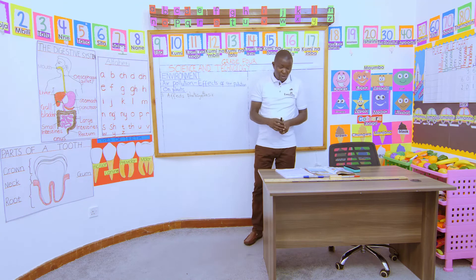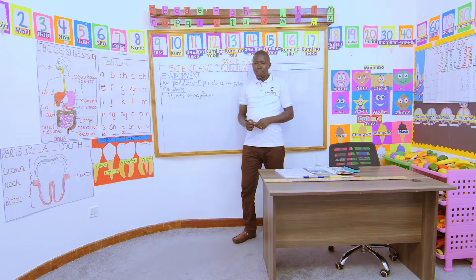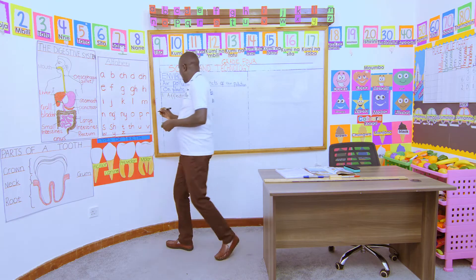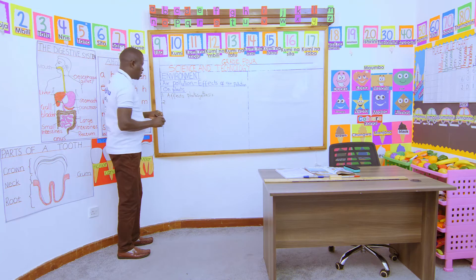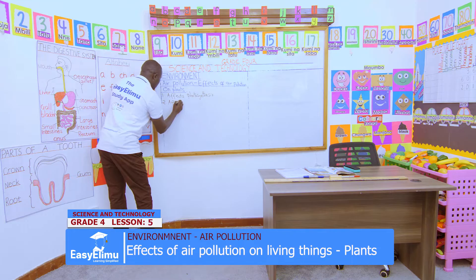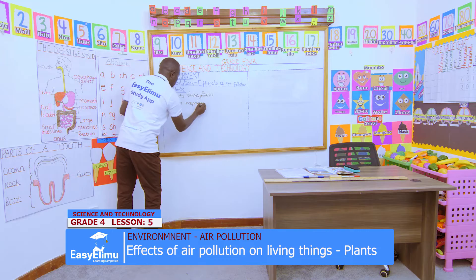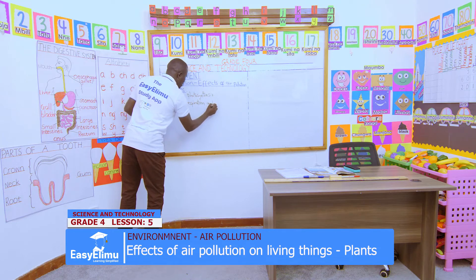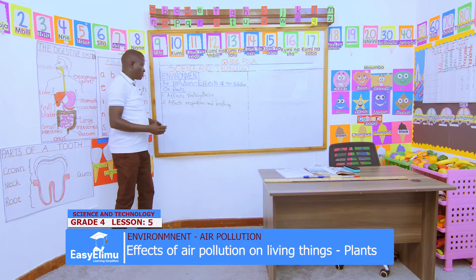Another effect — Jane, what have you discussed? The dust also affects respiration and breathing of plants. When air pollution clogs the air pores on plant leaves, it affects respiration. The plant cannot breathe well because of the dust particles. So, that is another effect of air pollution.